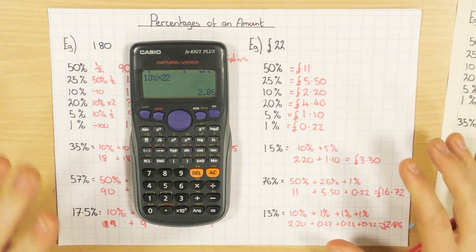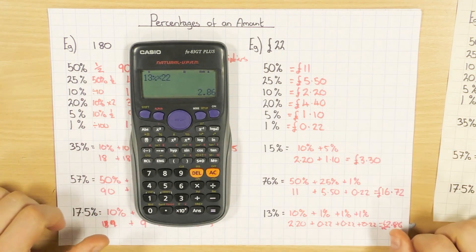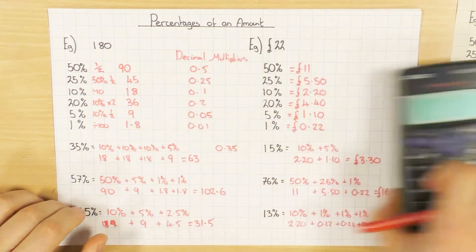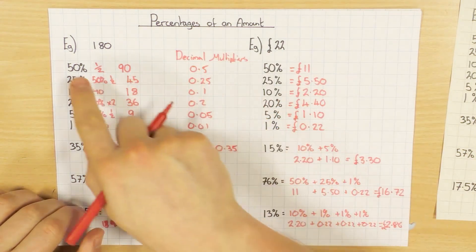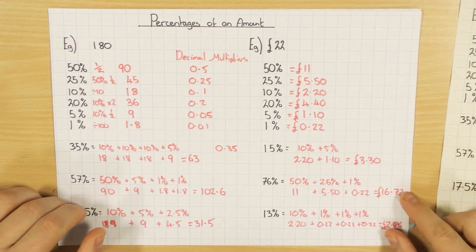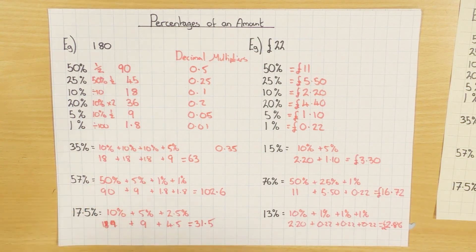So hopefully you've seen some ways to do it non-calculator and some ways to do it with a calculator. Just bear in mind, decimal multiplier all it means is convert it to a decimal, and that's what you times it by. Hopefully that helps. Cheers, guys.